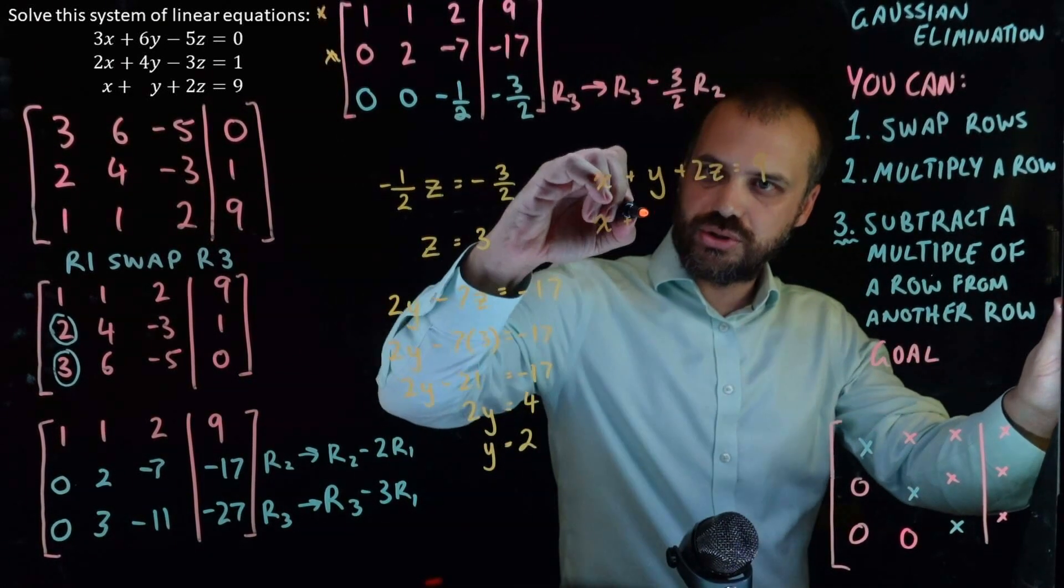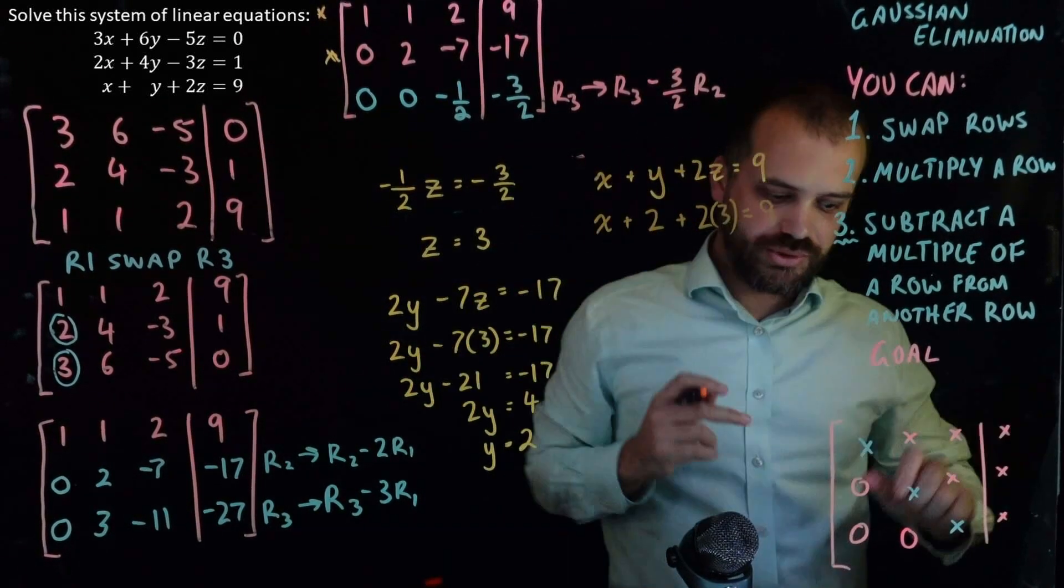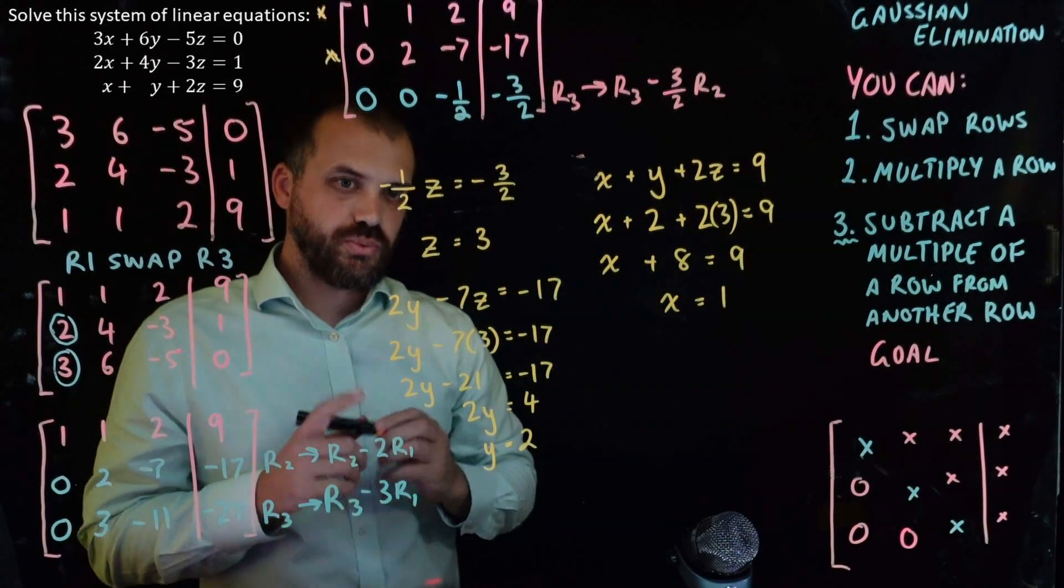x plus 2 plus 2 times 3 equals 9. And solving that equation, straightforward, x equals 1.